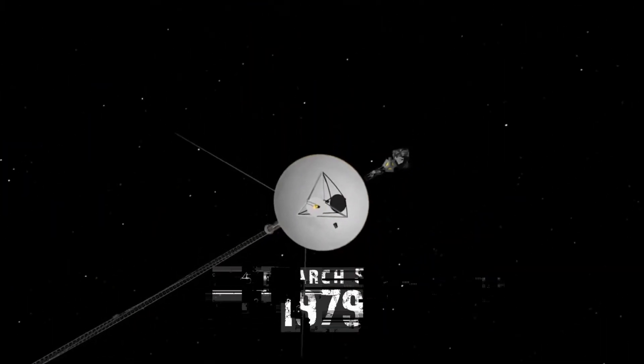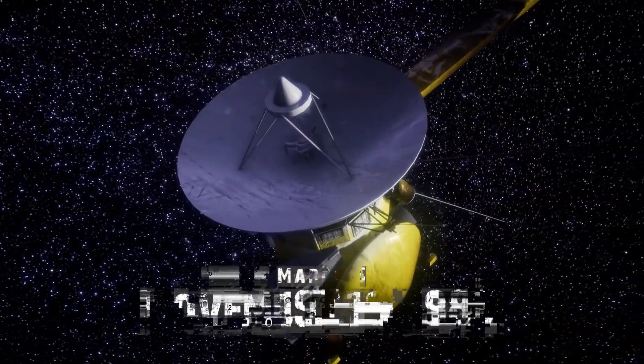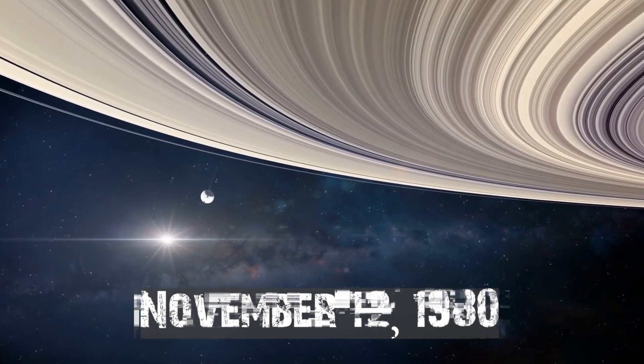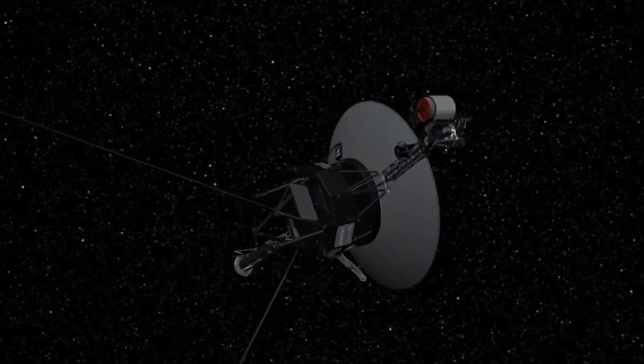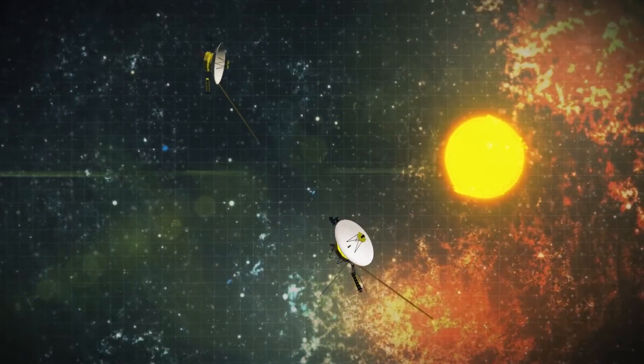Voyager 1 swung past Jupiter on March 5, 1979, and then proceeded towards Saturn, which it arrived at on November 12, 1980, using this gravity assist or slingshot approach. After that, it changed course and headed out of our solar system.